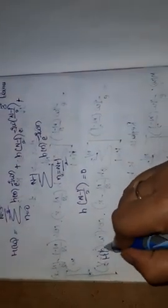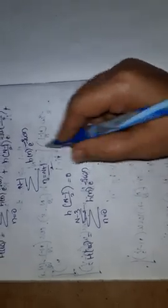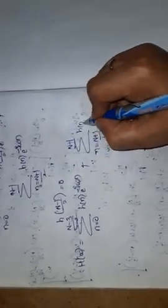So h of omega equals summation from n equals 0 to (N minus 3)/2 of h of n times e to the power minus j omega n, plus summation from n equals (N plus 1)/2 to N minus 1 of h of n times e to the power minus j omega n. The middle term becomes 0, leaving only two terms.